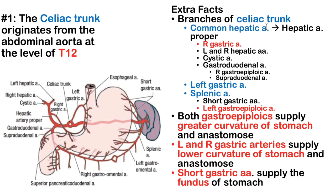So you have three major branches: the common hepatic, which comes over here and eventually forms two separate pathways. The common hepatic will go on to form the hepatic artery proper, and the other branch it divides into is the gastroduodenal artery, which we'll talk about in a minute.